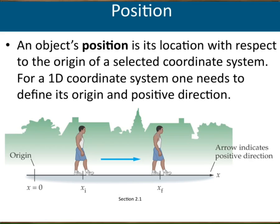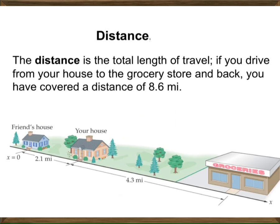Once you set up your coordinate system, the right direction shows the increasing X direction — all position values in that direction are positive. All values in the other direction are decreasing, which we call the negative X axis direction. Being positive or negative shows you the direction. A positive value means the direction is to the right; a negative value means it is to the left.